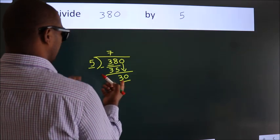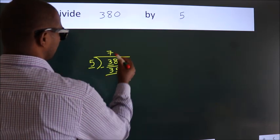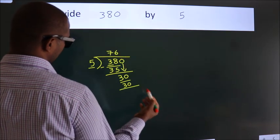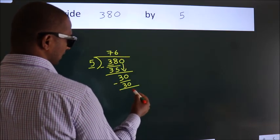When do we get 30 in the 5 table? 5 times 6 equals 30. Now, we subtract. We get 0.